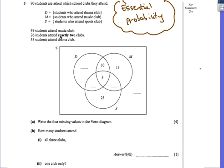So 26 students attend exactly two clubs. Where is that going to be? That's going to be this part here, because these students will be attending both dance, also drama and sports. It'll be this one here because those students will be attending sports and music, and it'll be this one here because those students will be attending drama and music. Those are the ones that attend exactly two.